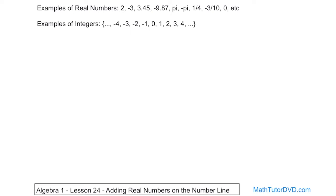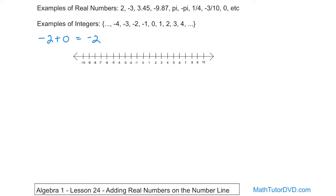We'll start out by adding integers, and we'll learn how to subtract them and so on. But these rules apply to any real numbers — any negative or positive decimals or fractions. The best way to do it is to jump right into an example. What if we wanted to add the following numbers together? We're going to use this idea of a number line to illustrate a few things, because as we get to more complicated problems, we'll need a number line to help us.